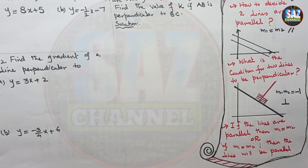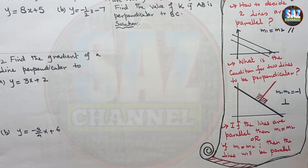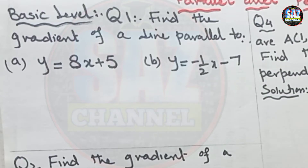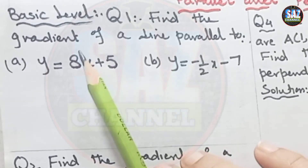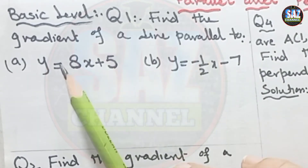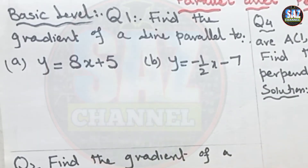These four points are really important for understanding parallel and perpendicular lines. Let's move to Exercise 60, basic level, question number one. Question one says: find the gradient of a line parallel to the given line.